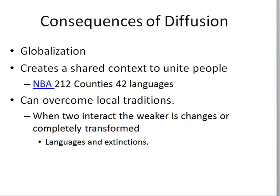Diffusion can be a good thing. If you like the NBA, today over 212 countries watch NBA games, broadcast in 42 languages — that's a result of globalization and directly related to economics. But it can also have a negative effect where it overcomes people's traditions, which is one reason people block or try to restrict many kinds of diffusion.